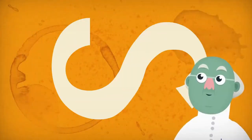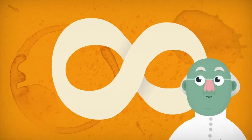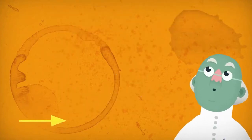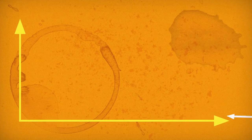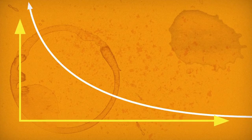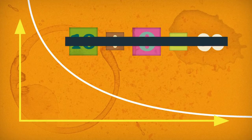That may sound plausible, but all we really know is that if we divide 10 by a number that tends towards zero, the answer tends towards infinity. And that's not the same thing as saying that 10 divided by zero is equal to infinity.